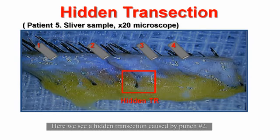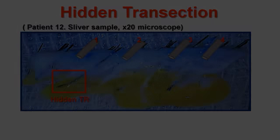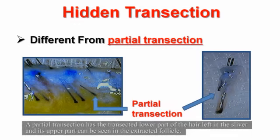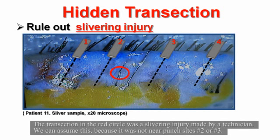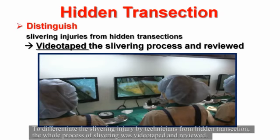Here we see a hidden transection caused by punch number two. A partial transection has the transected lower part of the hair left in the sliver, and its upper part can be seen in the extracted follicle. The transection in the red circle was a slivering injury made by a technician — we can assume this because it was not near punch sites two or three. To differentiate slivering injury by technicians from hidden transection, the whole process of slivering was videotaped and reviewed.